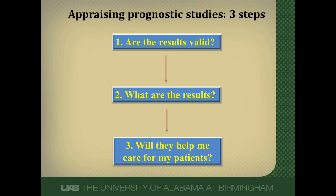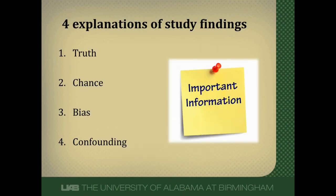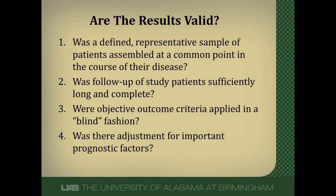Steps two and three will be dealt with in the apply module. A very important concept to take away is that there are four things that explain all study findings of every study: truth, chance, bias, and confounding. Your job as a reader is to determine the role of each of these in the study findings. What we're going to focus on in this lecture is bias — systematic errors that occur in the design or conduct of a study.